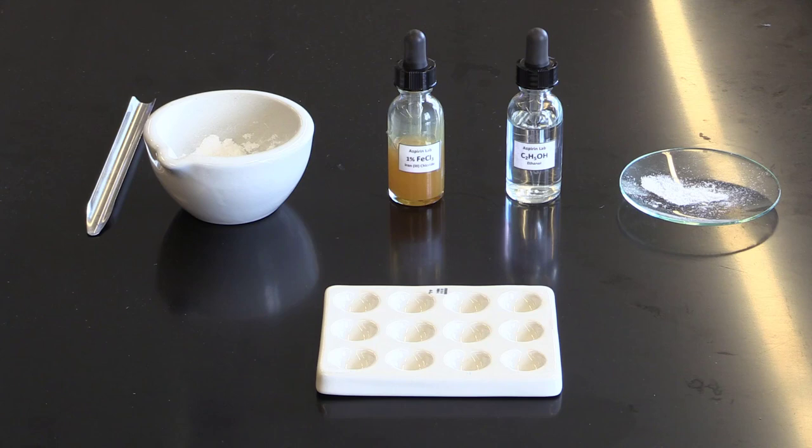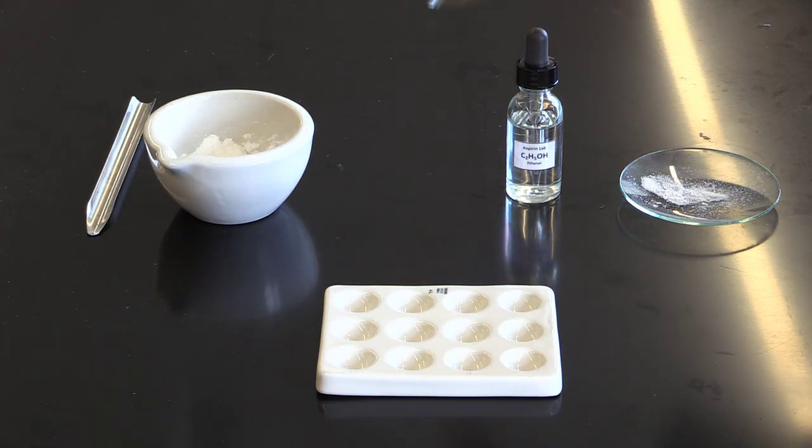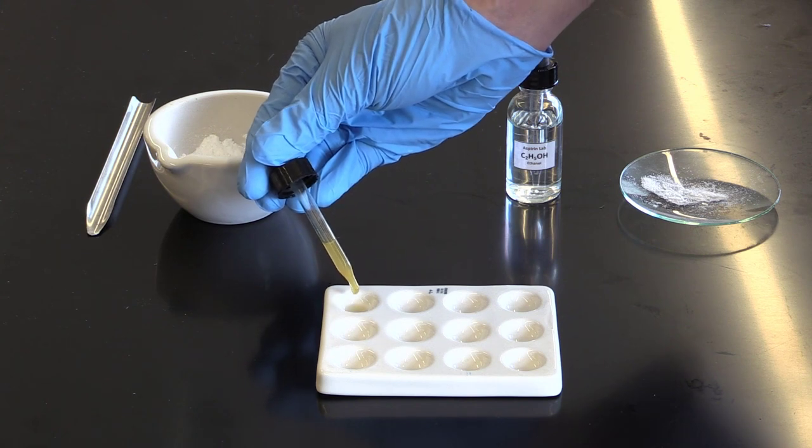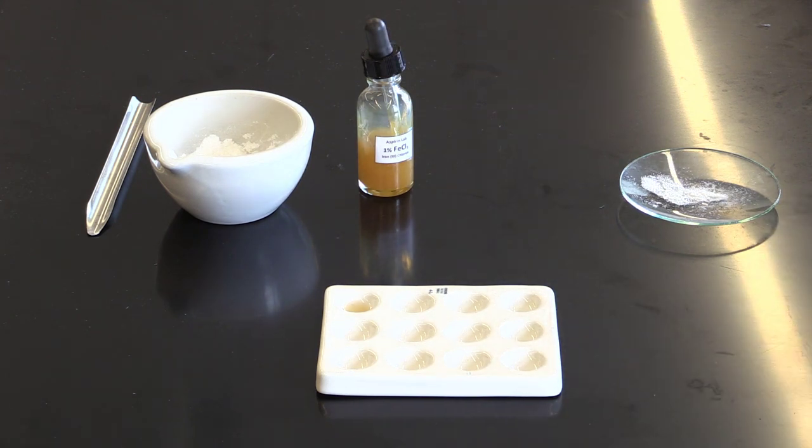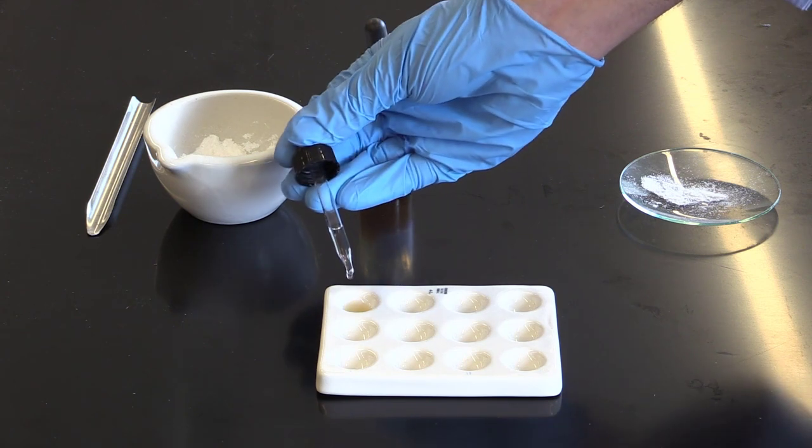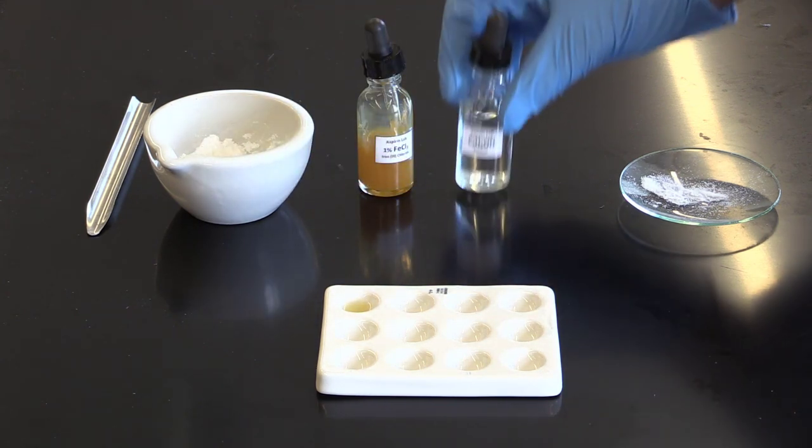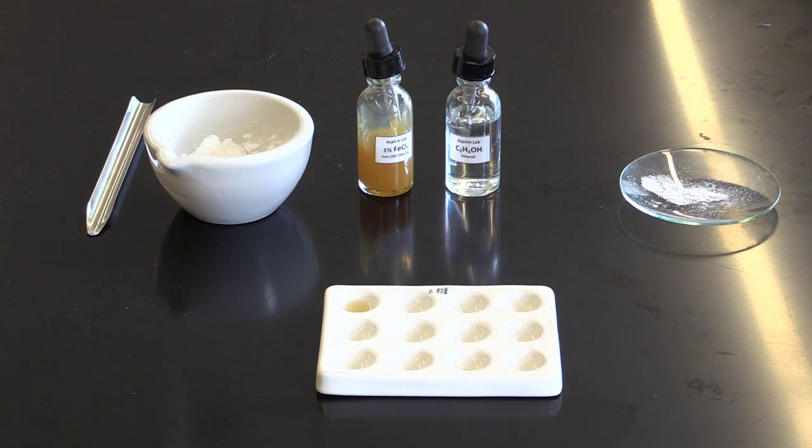The first thing we need to do is make sure that our ethanol is not contaminated. To do that, in the first well we are going to take our iron 3 chloride and our ethanol. If our ethanol is not contaminated, it should stay yellowish brown, which as you can see it is, meaning our ethanol is not contaminated.